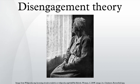Postulate 5: when both the individual and society are ready for disengagement, complete disengagement results. When neither is ready, continuing engagement results. When the individual is ready and society is not, a disjunction between the expectations of the individual and of the members of this social system results, but engagement usually continues.